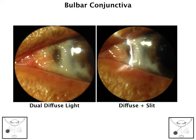Depending on the pathology we're looking at in the bulbar conjunctiva, there are different techniques we can use. In this particular example, we have an area of scleral thinning. In the first picture on the left-hand side, I used a dual diffuse light that gives a good overall picture and shows the area of the thinning and how large it is. But it doesn't really give us a good idea of the depth of the thinning. So when you add in a very narrow, bright slit beam, you can see the depth — on the right-hand picture, if you look very closely, you can see it bowing in, it looks concave. This gives us a better estimate of that thinning, and we can track that change over time to see if it's progressing.